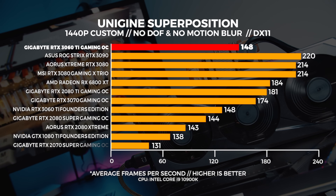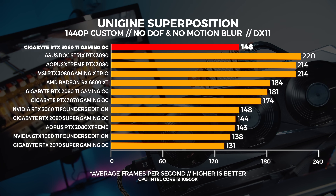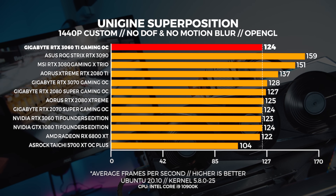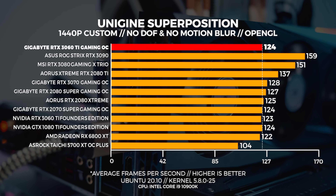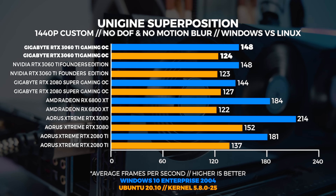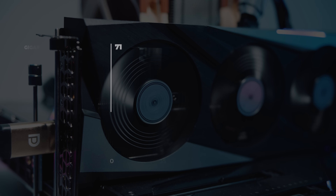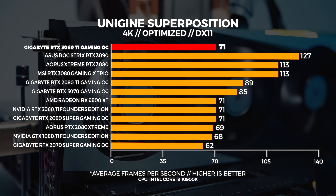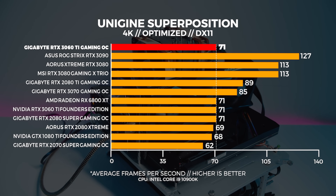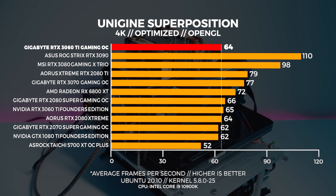At 1440p in Windows, the 3060 Ti is slightly faster than the 2080 Super and exactly the same as the Founders Edition. In Linux, all the cards around the middle of the graph from the 3070 down to the 6800 XT are performing relatively close to each other with only a few frames of difference. At 4K, we're seeing the same thing happen in Windows as with the 1080p extreme benchmark — the Gaming OC is equivalent to the 2080 Super and the 3060 Ti Founders Edition. In Linux at 4K, the Gaming OC is only a single frame behind the Founders Edition.